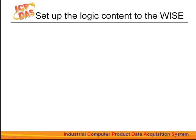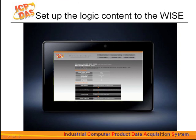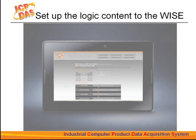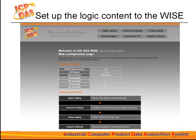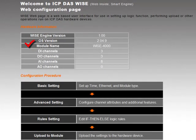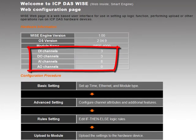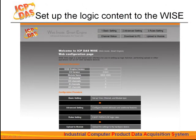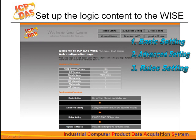In this section, we will show you how to set up the logic content through the WISE built-in interface. When successfully connected to the WISE controller, an interface like this will appear. It will show function buttons, the WISE model number, and the number of I/O channels it has. On your first time connecting to the controller, it will take four steps to finish your logic settings: basic settings, then advanced settings, then rule settings, and then you can upload the edited rules to the controller.